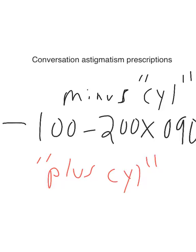So the first step is you look at the middle number. You convert the middle number to a plus number. So in this case, you convert a minus 2 to a plus 2.